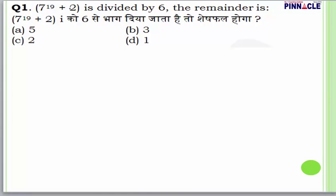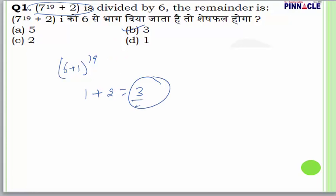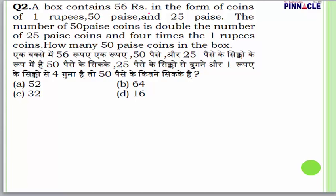Question number 1: 7 to the power 19 plus 2, divided by 6 — the remainder would be? You can write this according to the binomial expression. The remainder in this case would be 1 plus 2, which equals 3. So the remainder would be 3. According to the binomial expression, this can be written such that everything except 1 is divisible by 6, so the remainder is 1, and plus 2 already given makes total remainder 3.